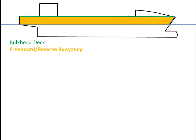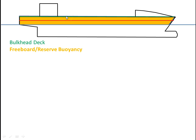When vessels are built, you have to have a factor of safety, and that factor of safety is expressed as an imaginary line called the margin line. The margin line is defined as an imaginary line that is three inches below the bulkhead deck.